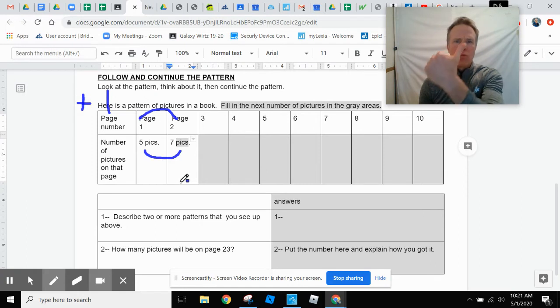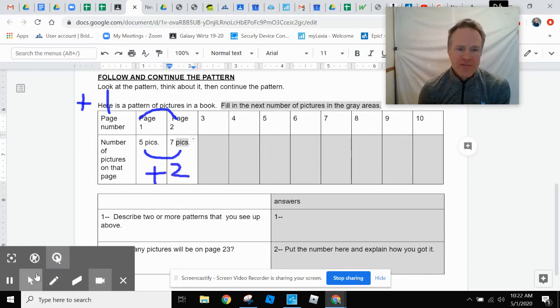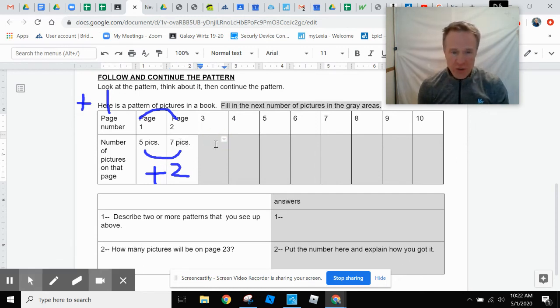Well, five plus one is six, plus one more is seven. Oh wow. That pattern is plus two. So now I know how to fill in the rest. Seven plus two is going to be nine. Nine plus two is going to be 11. Eleven plus two is going to be 13.